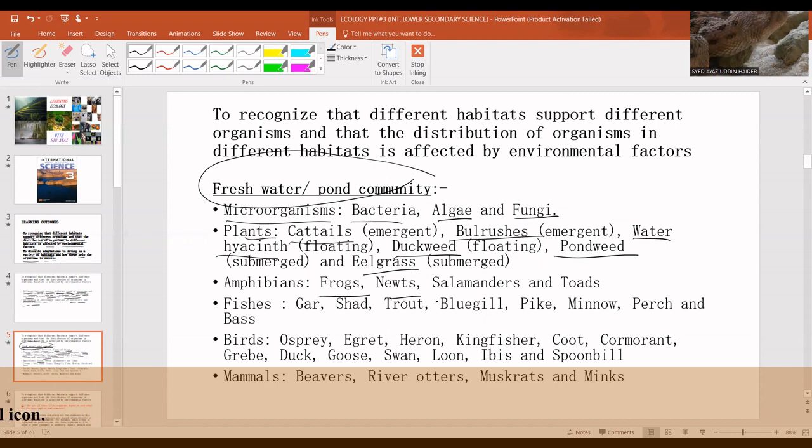Amphibians like frogs, newts, salamanders, and toads. Fishes like gizzard shad, trout, bluegill, pike, minnow, perch, and bass. Birds like egret, heron, kingfisher, cormorant, duck, coot, swan, loon, ibis, and spoonbill.